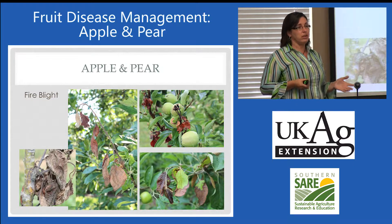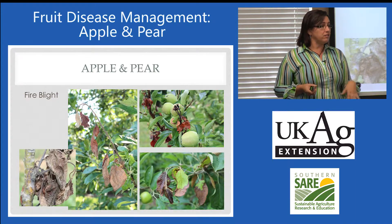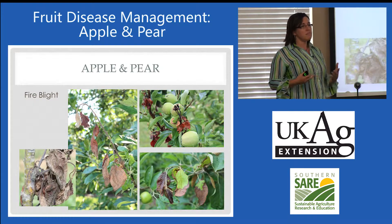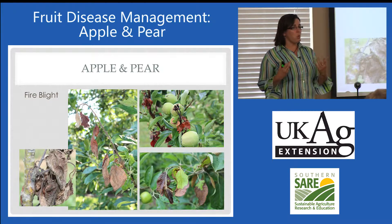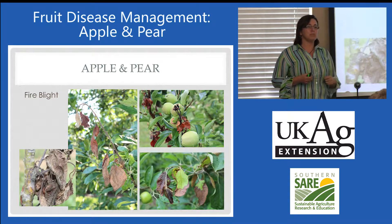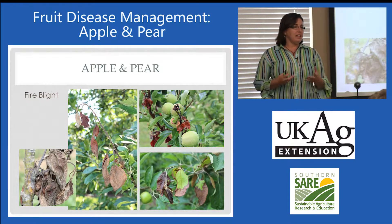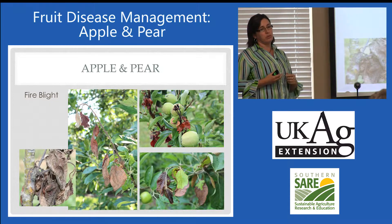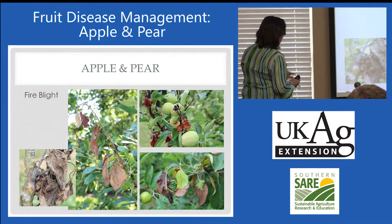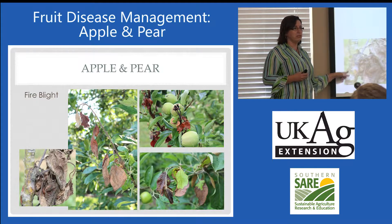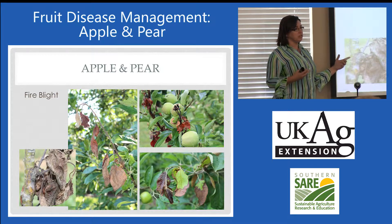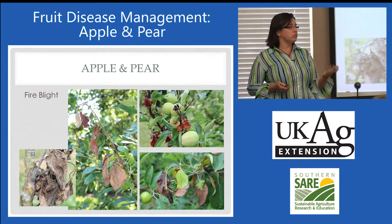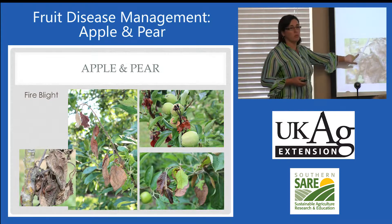The pathogen overwinters in cankers on the trees themselves — any dead, dying, and diseased wood is where the pathogen overwinters. Bacterial cells build up in the springtime when it starts warming up, and the first infection stage is the blossom stage. That's where those cells continue to build up and then young succulent growth is infected. We also have cankers, and if the disease continues to spread and progress, you'll see cankers as infection continues through woody tissue. It's through these cankers that overwintering occurs.